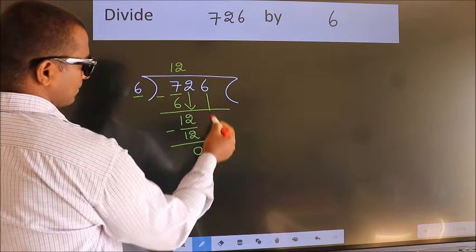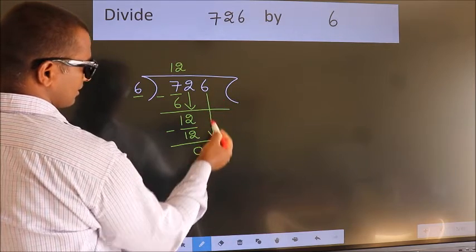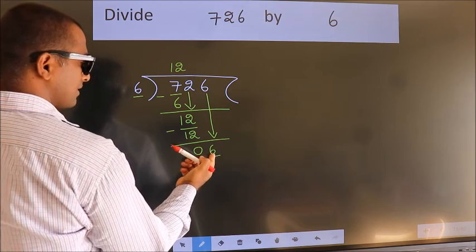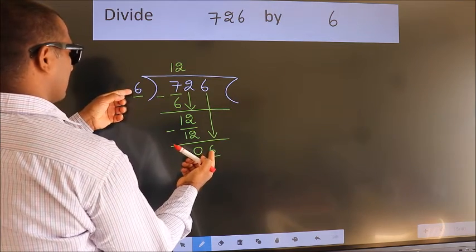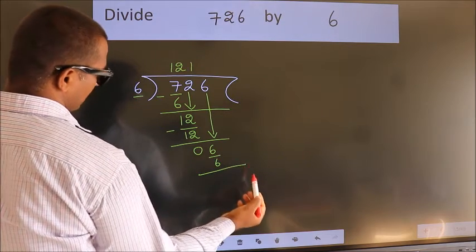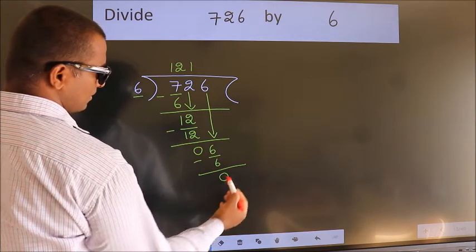After this, bring down the beside number. So 6 down. So 6. When do we get 6 in 6 table? 6 ones, 6. Now we subtract. We get 0.